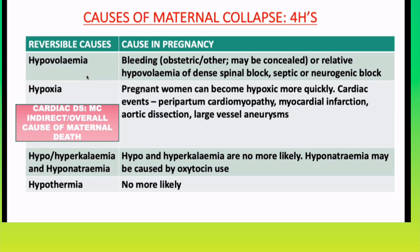The second H is hypoxia, generally due to cardiac conditions like peripartum cardiomyopathy, myocardial infarction, aortic dissection, and large vessel aneurysm. There are two types of causes of maternal death: direct causes related to pregnancy such as preeclampsia and thromboembolism, and indirect causes which were pre-existing but aggravated in pregnancy, such as cardiac disease, iron deficiency anemia, neurological disease, and asthma.